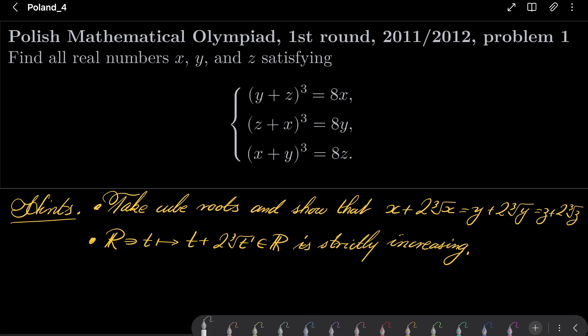And notice that the function which maps real number t to t + 2∛t is strictly increasing, hence injective. So give this problem a try and I will see you in just a minute.